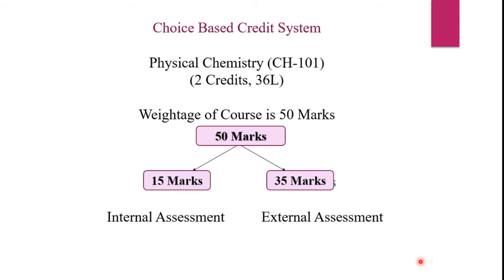In this, I am going to teach you physical chemistry subject. The subject code is CH101. My subject is for 2 credits and for 36 lectures. The weightage of the course is 50 marks. The 50 marks are further divided into 15 marks and 35 marks.